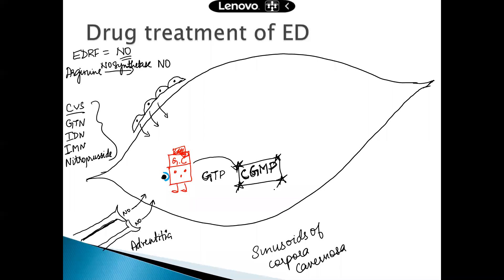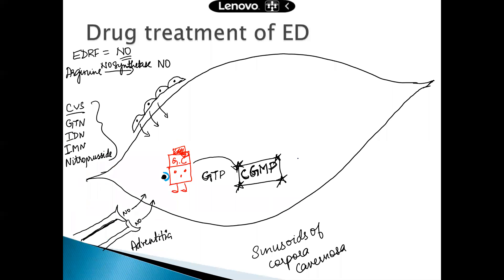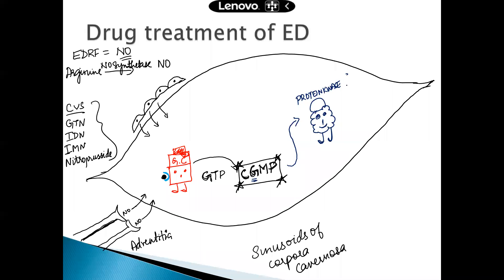This cyclic GMP in turn causes the formation of a very important enzyme called a kinase. Kinases, as you know from biochemistry, are a group of enzymes that bombard any tissue, effector cell, chemical, or receptor with energy. This particular kinase is named protein kinase G — since we have G from cGMP, it is called protein kinase G.